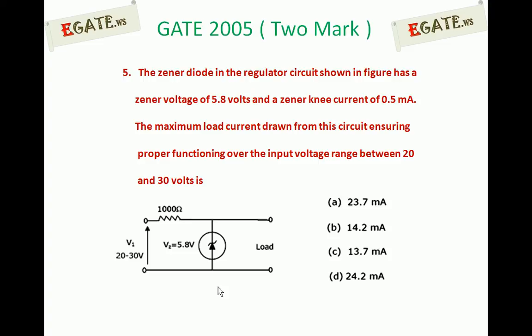The maximum load current drawn from this circuit ensuring proper functioning over the input voltage range between 20 and 30 volts is: (a) 23.7 mA, (b) 14.2 mA, (c) 13.7 mA, (d) 24.2 mA. Correct answer for this question is 23.7 mA.